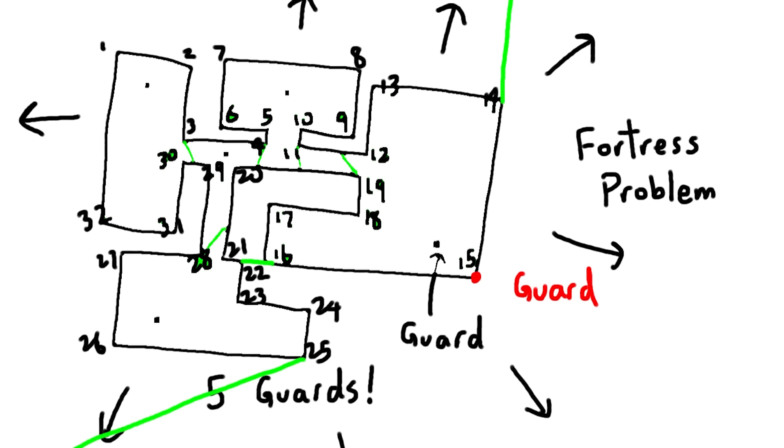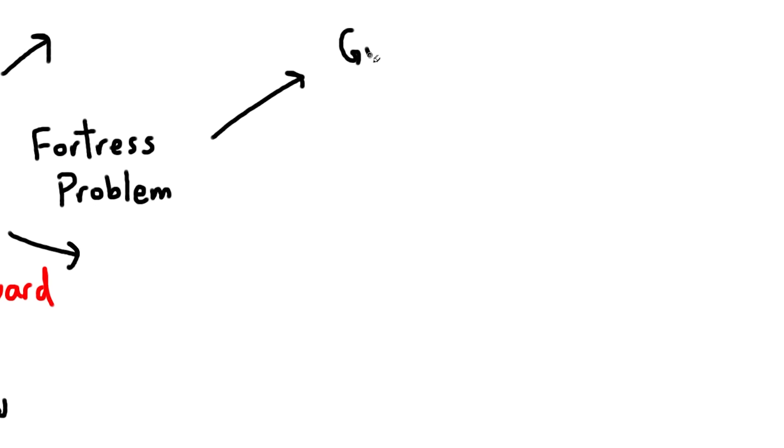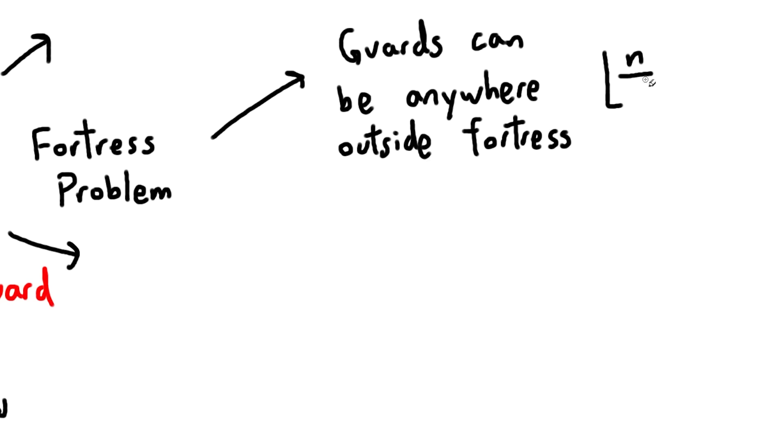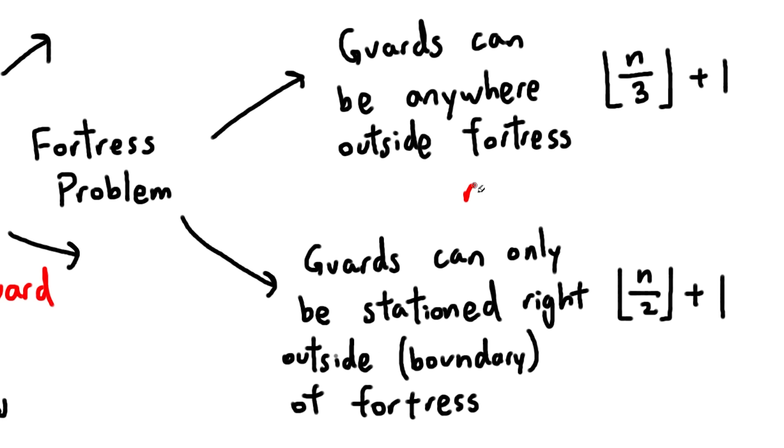This problem can be split up into two problems. One is where the guards can be anywhere outside the fortress, and the other is where the guards can only be on the boundary of the fortress, so they must be touching the polygon. And you can see here the upper bounds for each of those two scenarios.